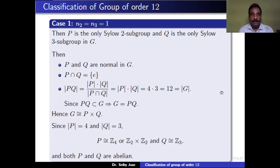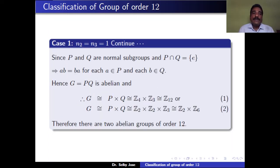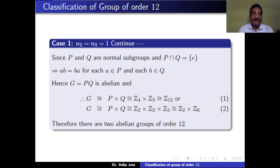Both P and Q are abelian groups. Since P and Q are normal subgroups with P ∩ Q = {e}, the commutator aba⁻¹b⁻¹ belongs to P ∩ Q, so aba⁻¹b⁻¹ = e, meaning ab = ba for any a ∈ P and b ∈ Q. Thus elements of P and Q commute with each other, and G = PQ is an abelian group.